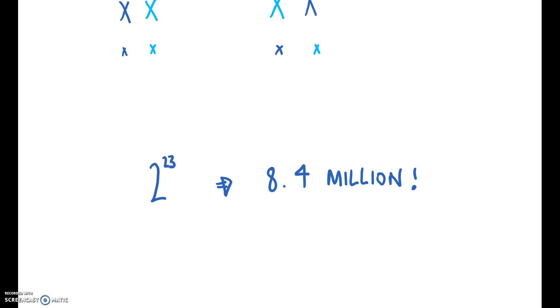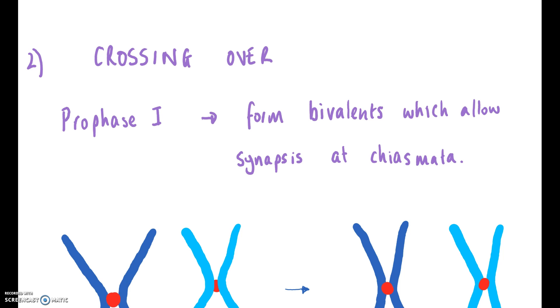And the way that it increases variation is it makes new combinations of alleles. And that is the key term here, trying to make new combinations of alleles. The second mechanism for producing variation during meiosis is through crossing over.